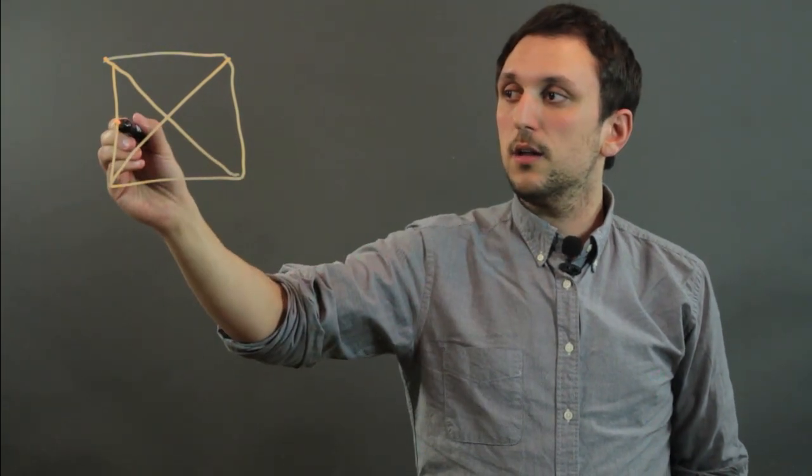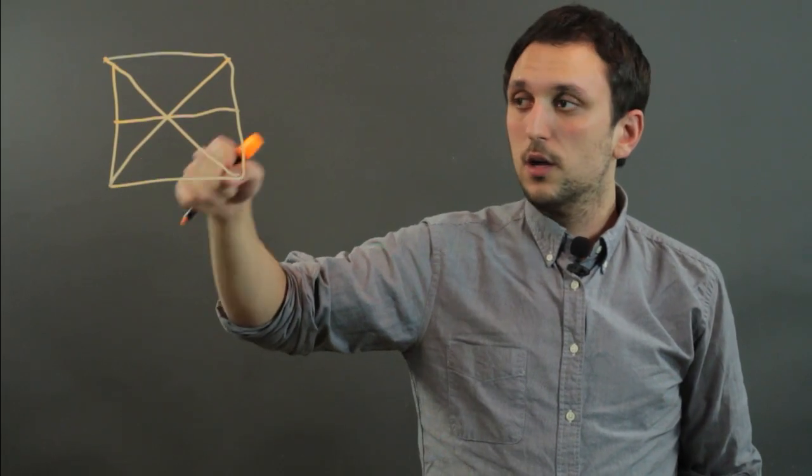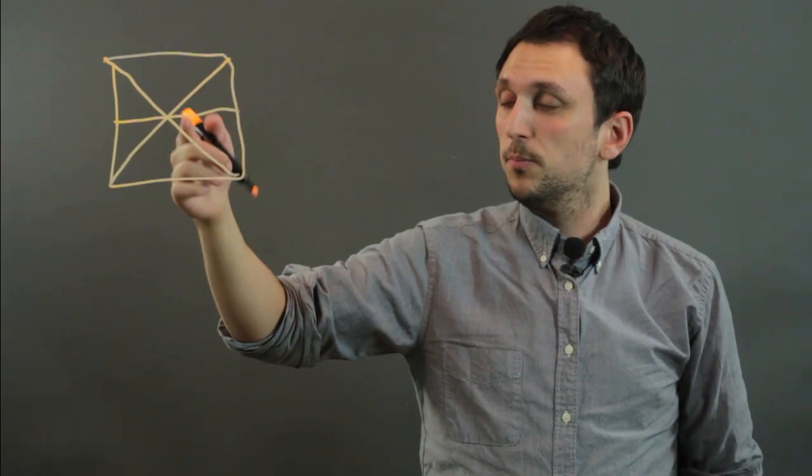We can then cut it like this, so now we have one, two, three, four, five, six, so here we now have sixths of a square.